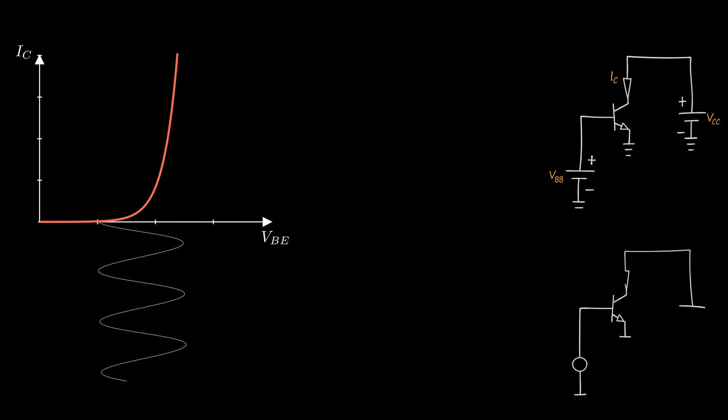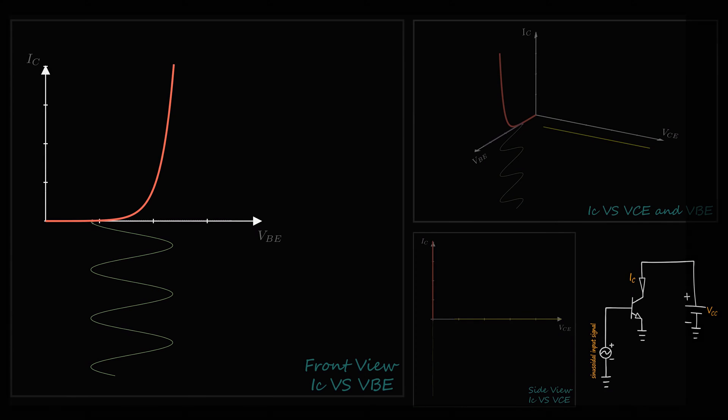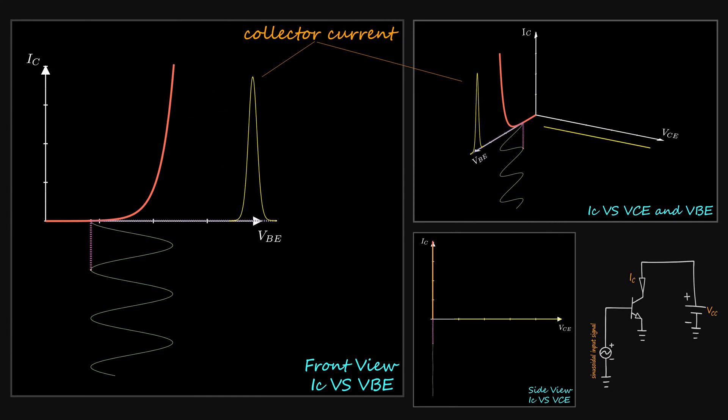If we have a sinusoidally time varying voltage signal applied to the input as VBE, then each VBE generates its own IC according to the exponential relationship. Since the curve is not linear, the output is deformed and does not preserve the sinusoidal shape.